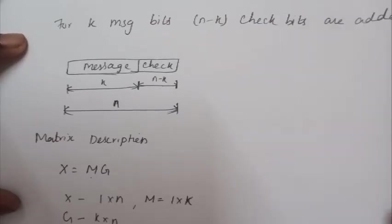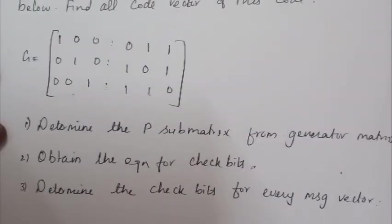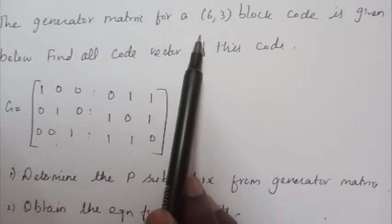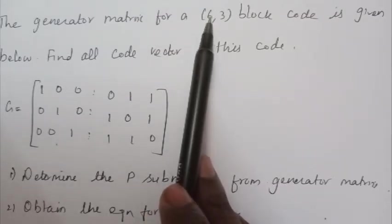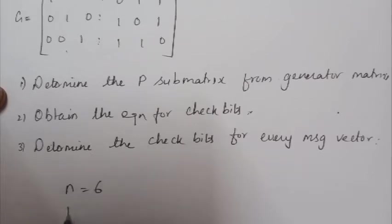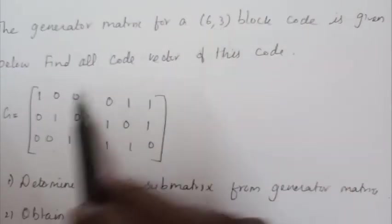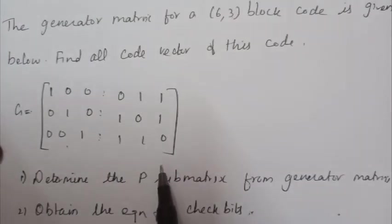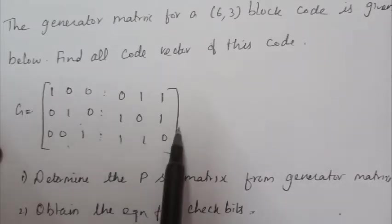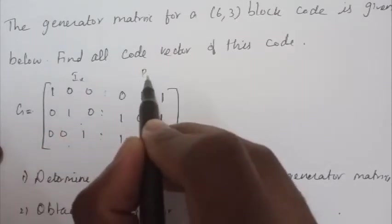With this understanding of linear block codes, let's solve the problem. The input data given is n = 6, k = 3. So the length of the code vector n is 6 and k is 3. The G matrix is given. From the formula, G = [Ik | P], where P is of size k×q, this is your identity matrix portion and this is your P submatrix of size k×q.